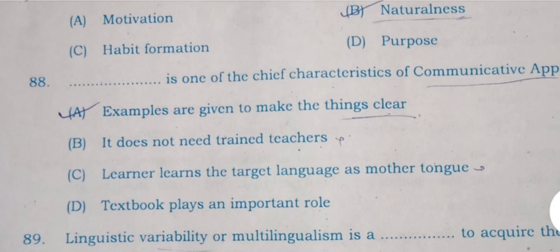Question 88: What is one of the chief characteristics of communicative approach? A) examples are given to make things clear, B) it does not need trained teacher, C) learner learns the target language as mother tongue, and D) textbooks play an important role. In the communicative approach, C is the right answer: learner learns the target language as mother tongue.